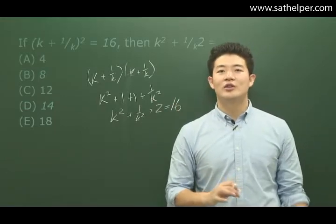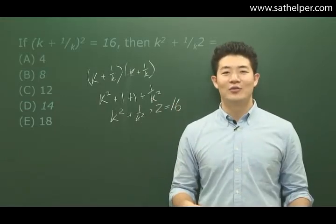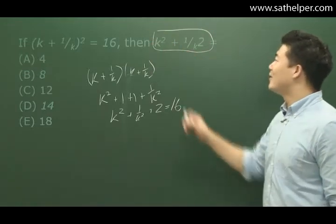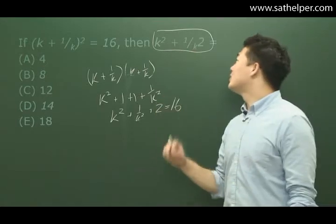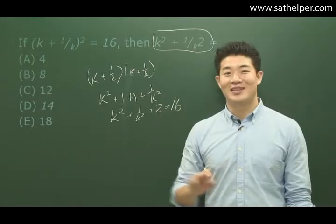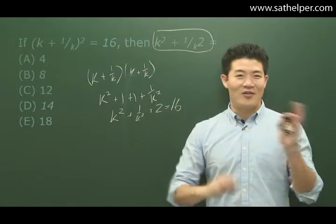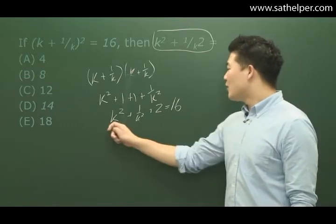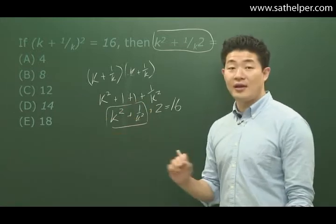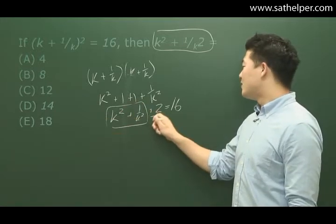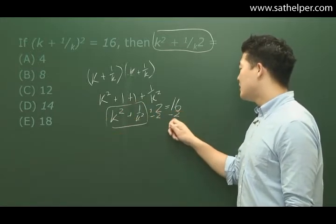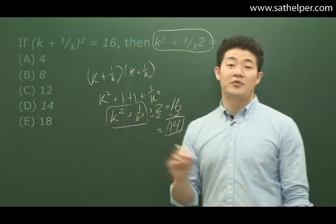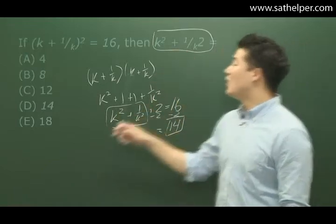Remember, don't try to solve for everything. The question asks what k² + 1/k² equals. That's what they want—they don't want you to solve for k. Since we already have k² + 1/k² + 2 = 16, all we need to do is subtract 2 from both sides, giving us k² + 1/k² = 14. That's exactly what they want.